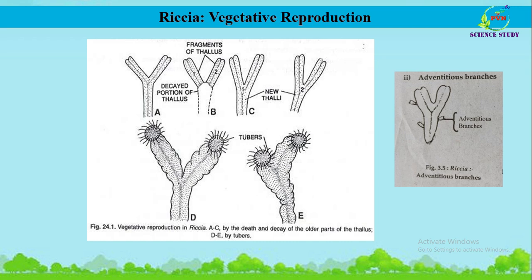The fourth and last vegetative reproduction type is persistent apices. In many species of Riccia that grow in regions having a prolonged dry season, the entire plant except the growing apices of the thallus perishes. These persistent apices of the thallus lobes grow downward into the soil. On the return of the favorable period, the apices grow into new individuals of Riccia. With this we have completed the four different types of vegetative reproduction in Riccia.